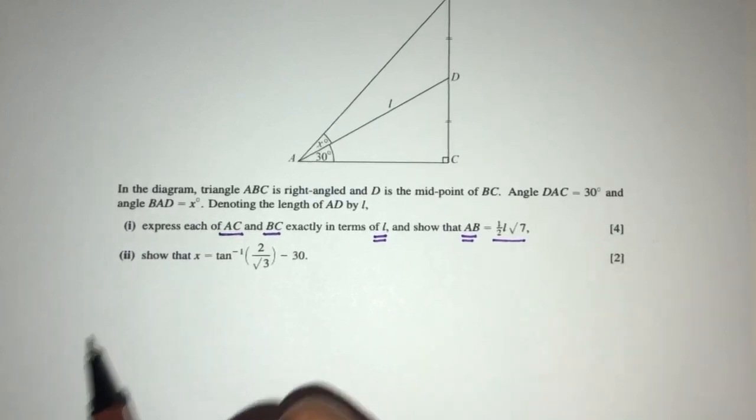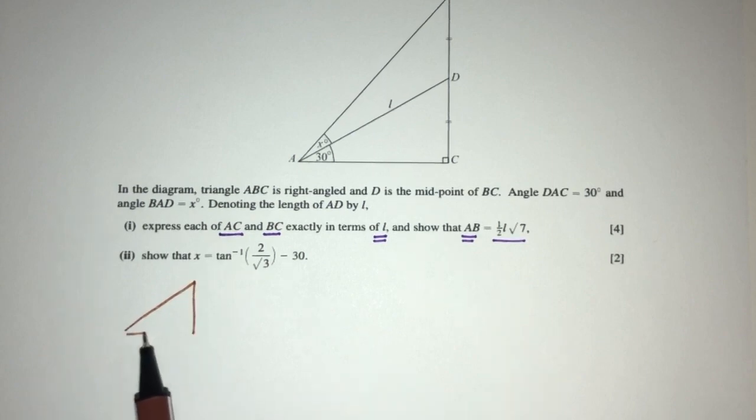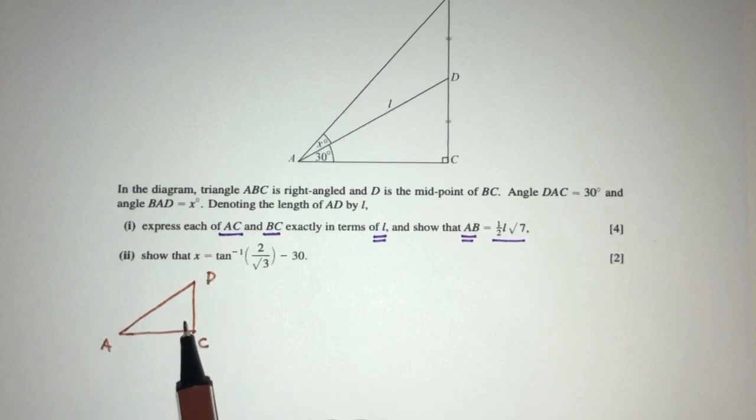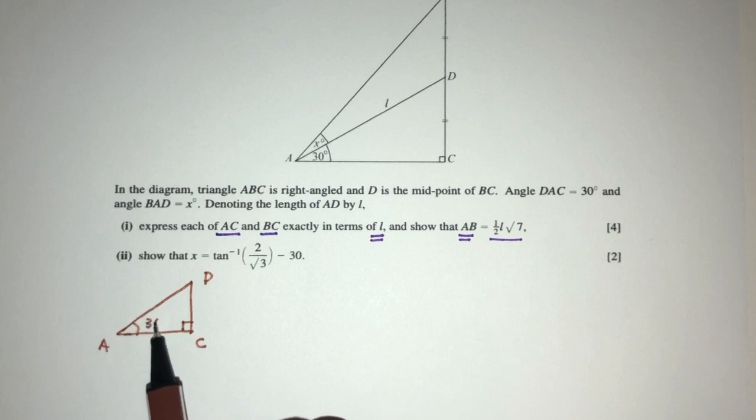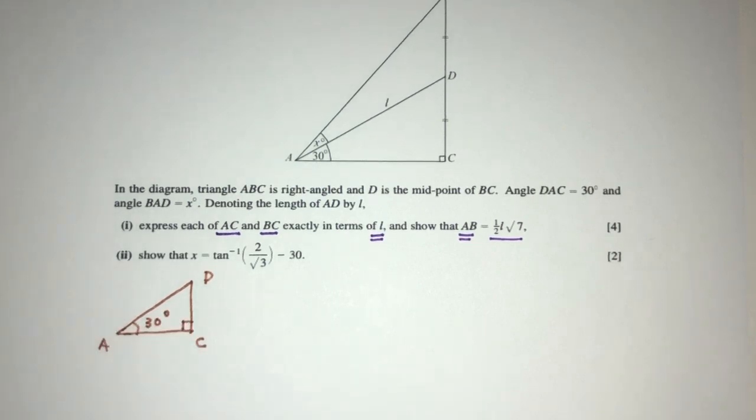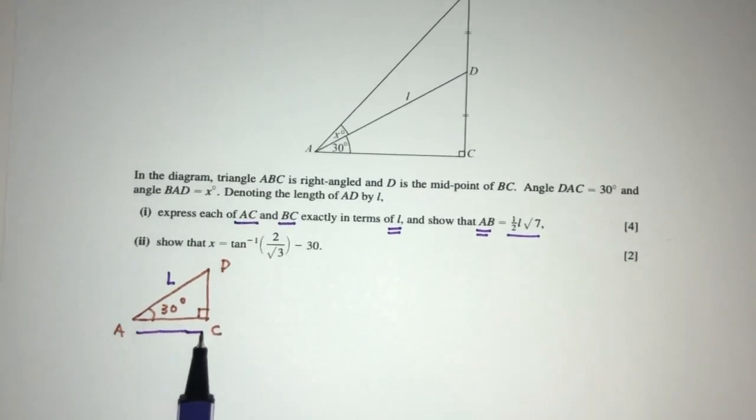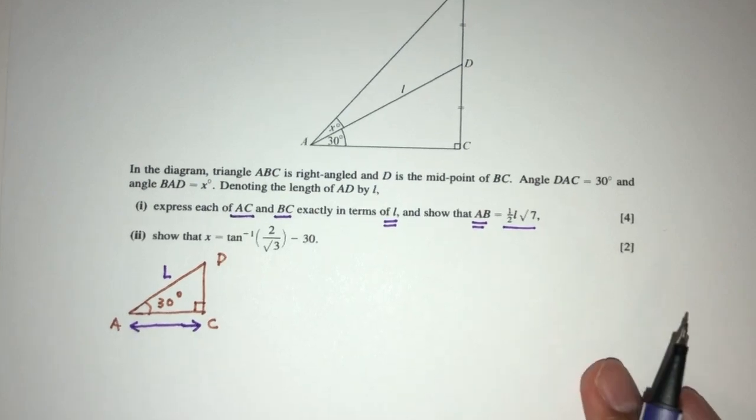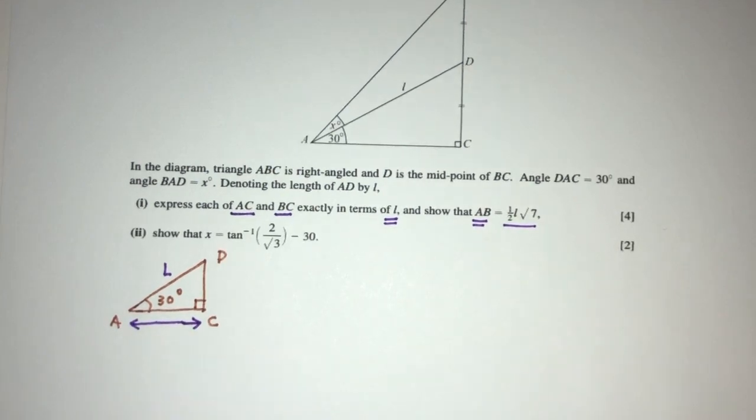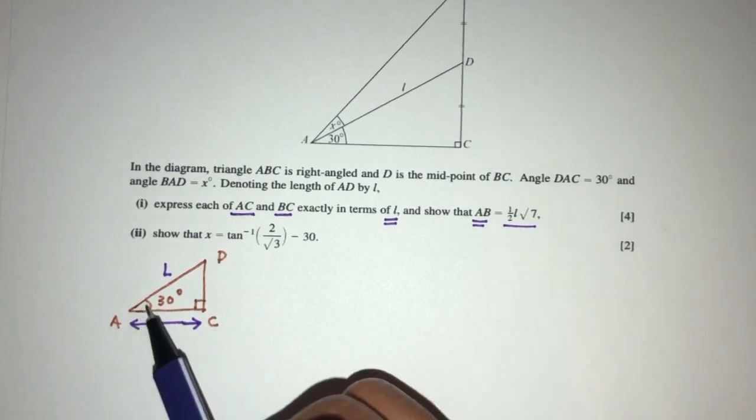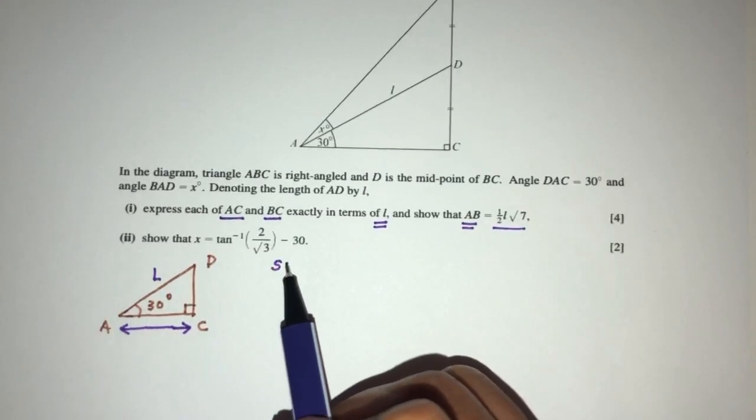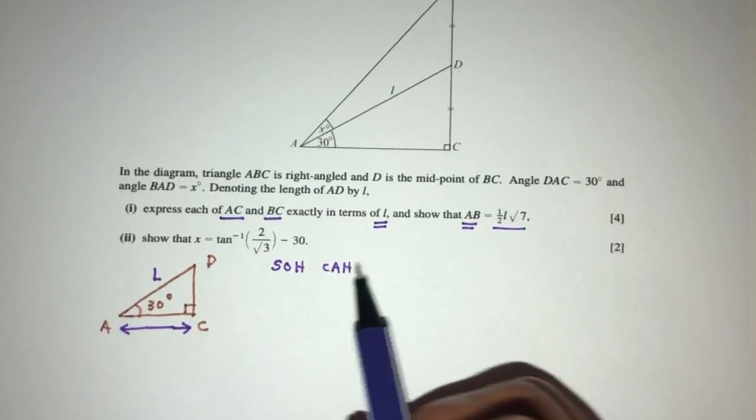Let me take out the shape of triangle ADC. So we have A, D, and C. This is AC and D. Now we know this is a right angle and this is 30 degrees. We know this is L, and we have to find the value of AC.